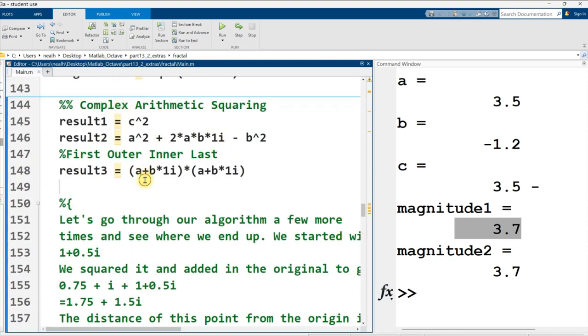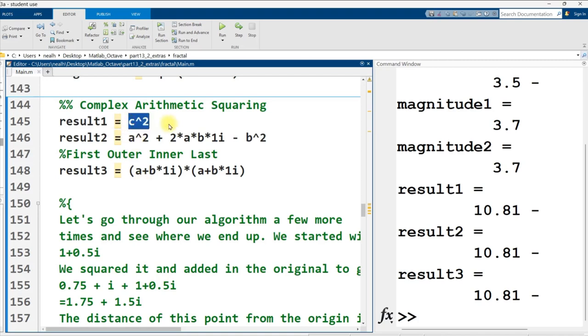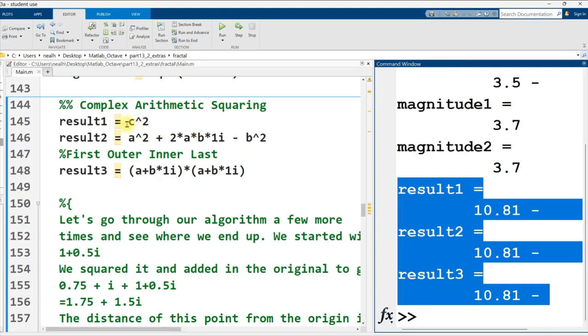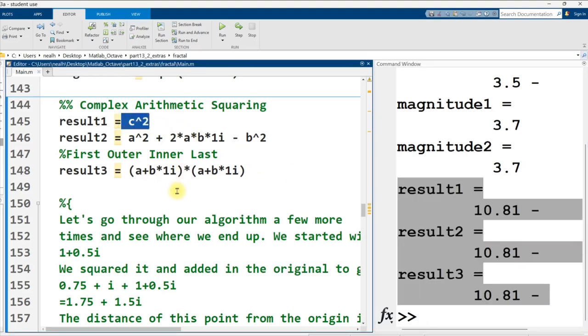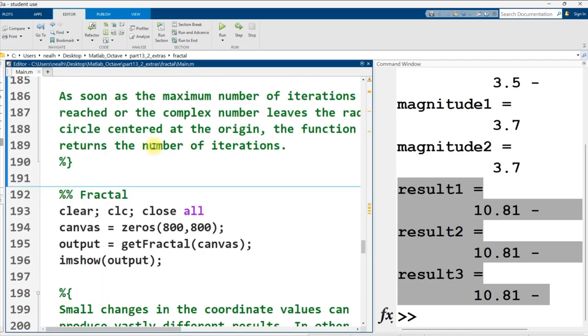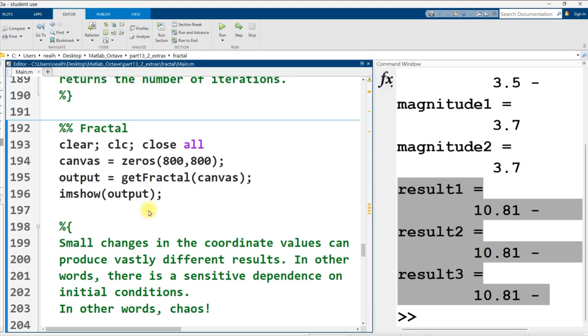All right, let's just look at a little bit more complex arithmetic squaring right here. I take my complex number from the previous section, I square it. That is the exact same thing as simply foiling out the components. I get the same result for all three. Just kind of emphasizing what does it look like to square a binomial. Let's run our fractal and talk through it.